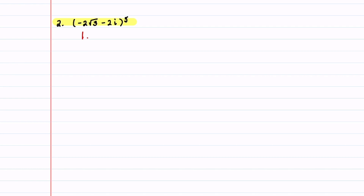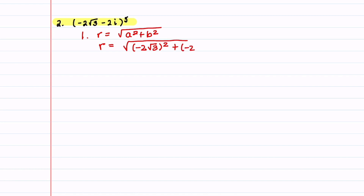Let's now look at our second example. Our first step is to find r. r equals the square root of a squared plus b squared, which equals the square root of negative 2 root 3 quantity squared plus negative 2 squared. This equals the square root of 12 plus 4, which is the square root of 16, or 4.